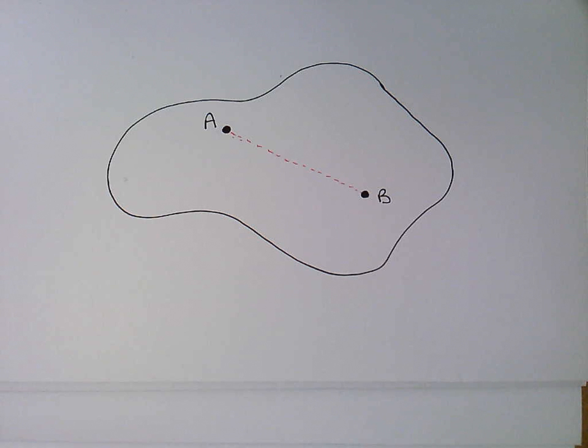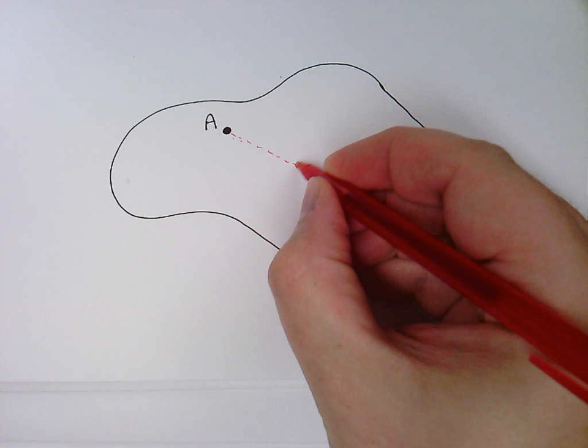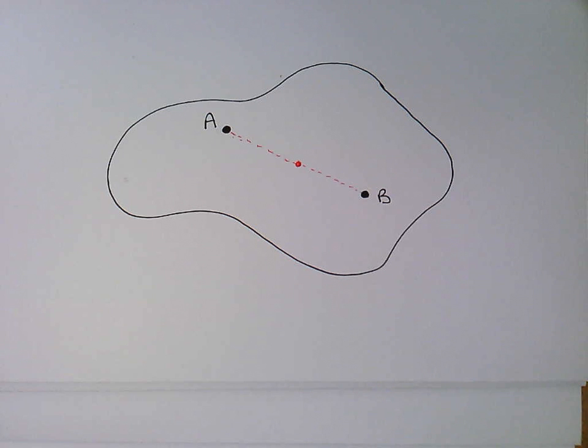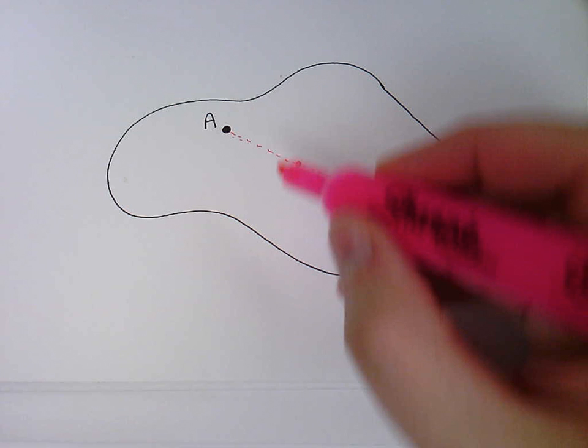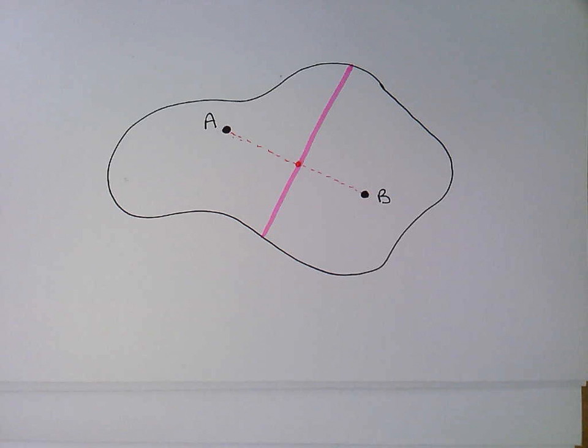Now what I want to do is do a perpendicular bisector which basically means I'm going to find a halfway point. Again, if I care to pull out a ruler I could do so but I'm just going to eyeball it right now. The halfway point goes about there and I want to draw a line perpendicular to that line that goes through that central point, thus perpendicular bisector. This one, because it is so simple, that's pretty much all there is to it.